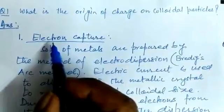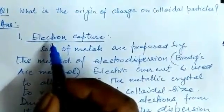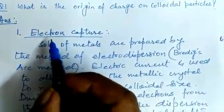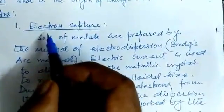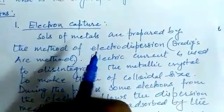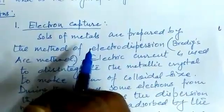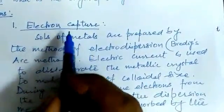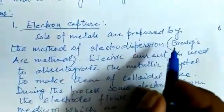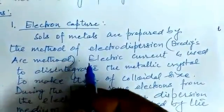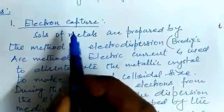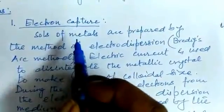First, we are discussing electron capture — how electrons are captured by the sol particles. The charge present on the colloidal particle can be assigned to the method of its preparation. In electron capture, when we are using electrodispersion, the method used is Bredig's arc method. We are using electric current, and the chances of colloidal sols having negative charges are maximum.